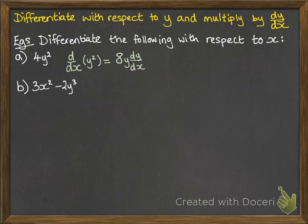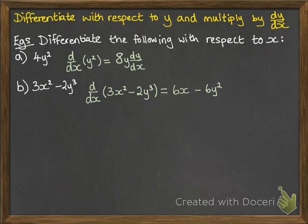The next one, 3x squared minus 2y cubed. So we're going to differentiate that whole term with respect to x. The first bit, that's simple, we just differentiate it with respect to x. The second term, you differentiate it with respect to y to get 6y cubed, and then times by dy by dx.